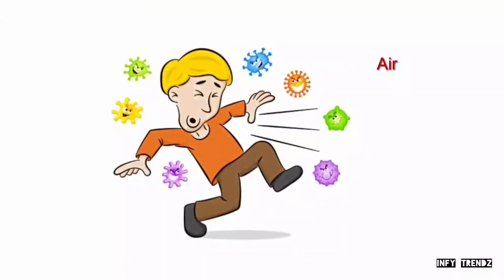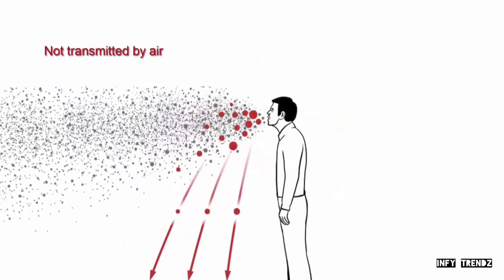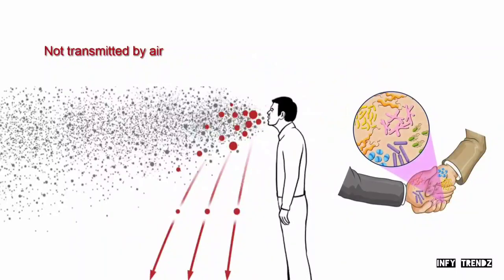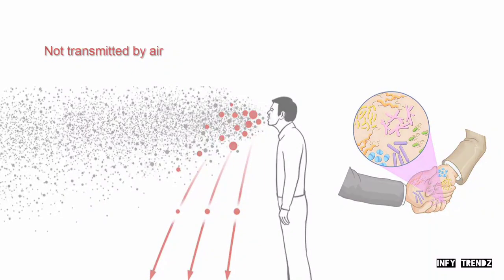Some people are thinking this virus is transmitted by air. No, it's not true. Coronavirus does not settle in the air, but it is grounded. It needs a medium to travel from one person to another person. So it is not transmitted by air.